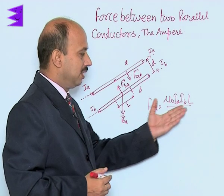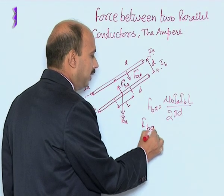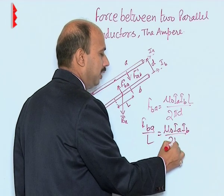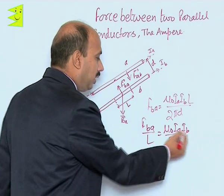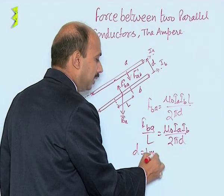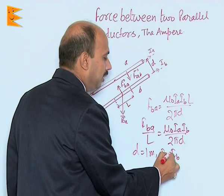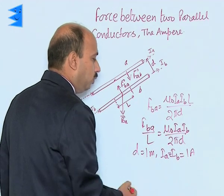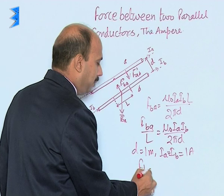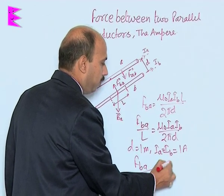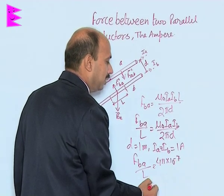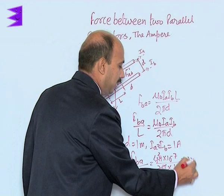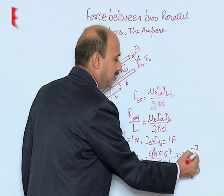The force per unit length is F_BA / L = μ₀ I_A I_B / 2π D. Now, taking D = 1 meter and I_A = I_B = 1 ampere, and substituting μ₀ = 4π × 10⁻⁷, we get F_BA / L = 4π × 10⁻⁷ / 2π × 1. The 2π terms cancel, giving 2 × 10⁻⁷ Newton per meter.